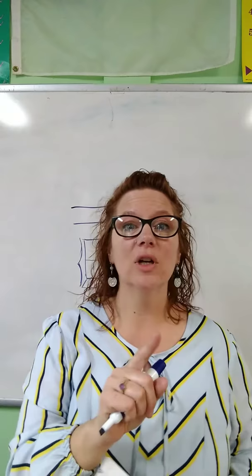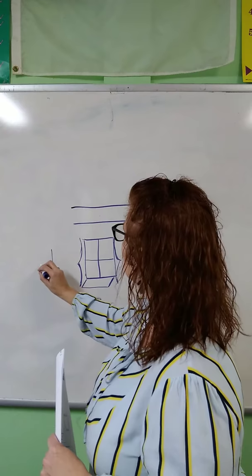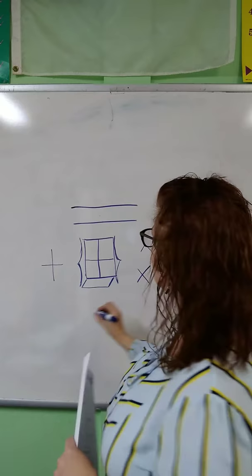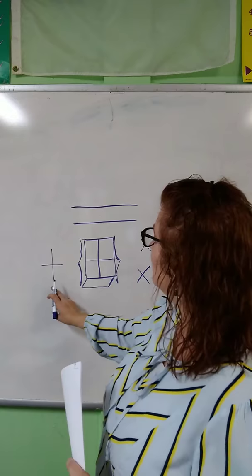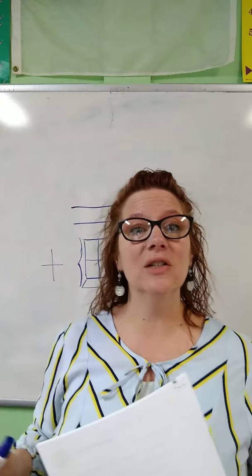The other kind of line we're going to talk about are called intersecting lines. Those are lines that cross each other, and they can cross in any direction — sideways like the letter X, up and down like your window panes, or like the letter T. Those lines that cross each other are called intersecting lines.